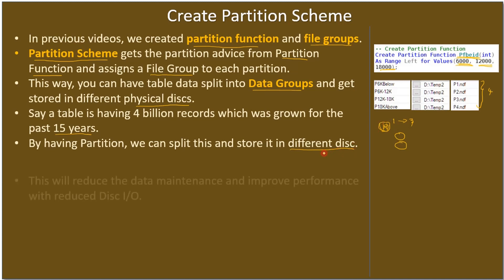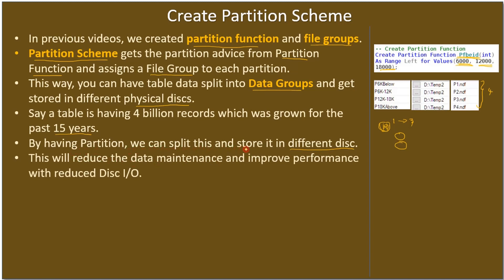That's the use of partitioning. By having partitions we can split and store data on different disks, which reduces data maintenance and improves performance with reduced disk I/O. In each disk we have a different partition, so if our partitions contain four groups divided based on person ID, when a query comes with a specific person ID, SQL Server knows which partition to look at. It looks at a subset of data rather than all rows, because it knows the data is in that specific partition.